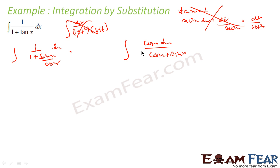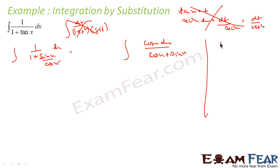Now we have to solve this. If I assume sin x as t, I get cos x dx in the numerator — that is correct — but I don't know what to do with the denominator cos x + sin x. So let us try something else. What if we take cos x + sin x as t?